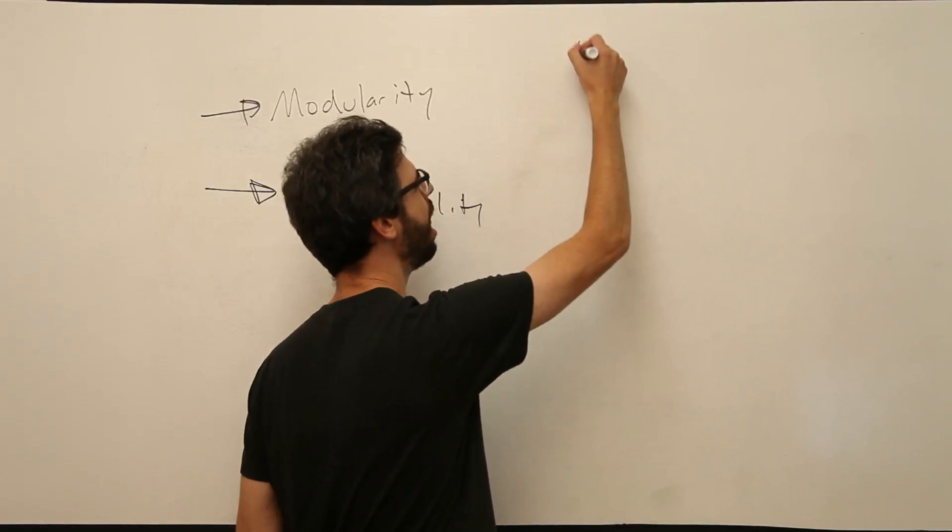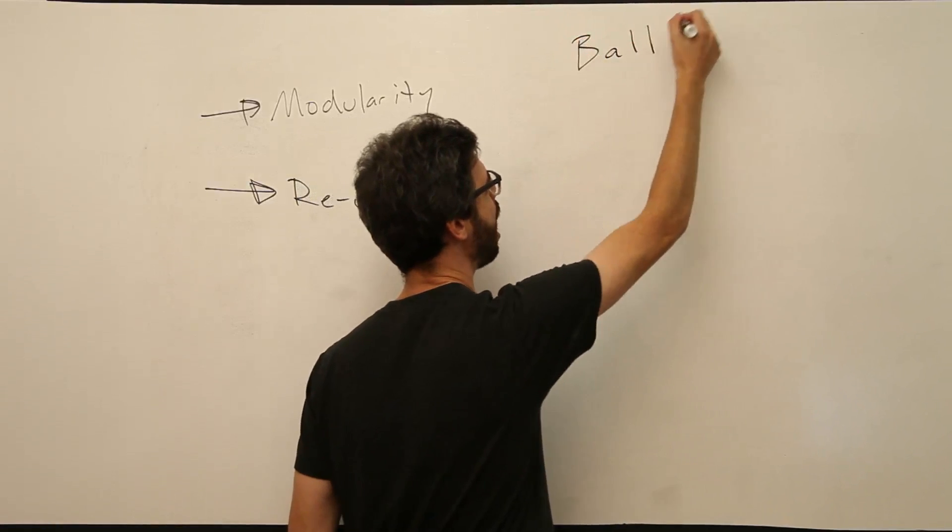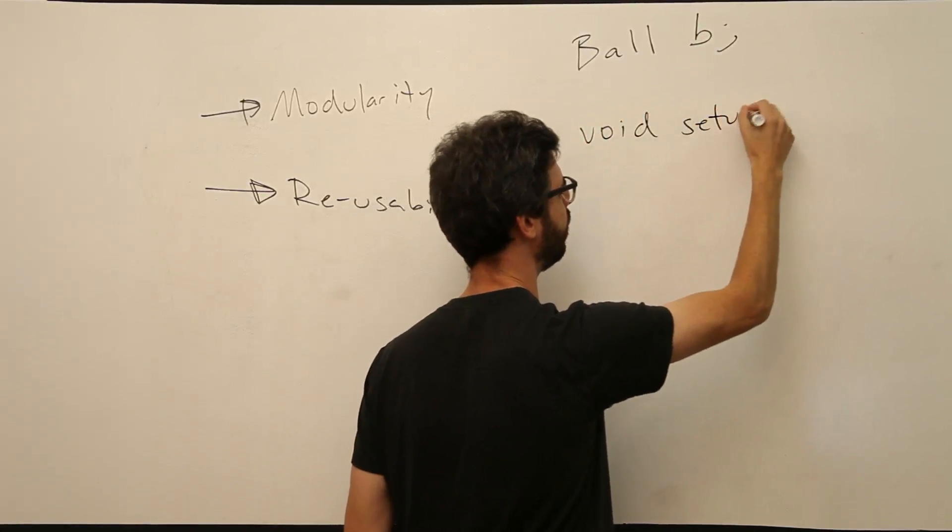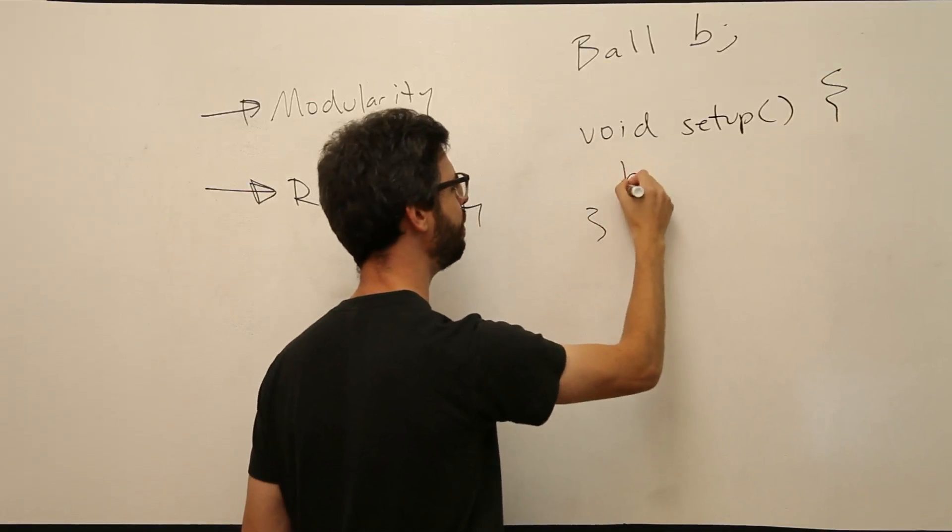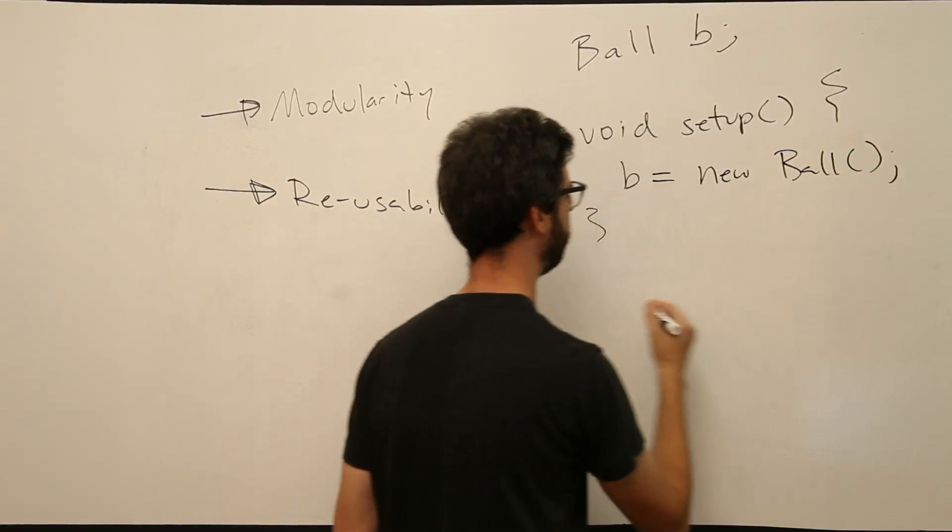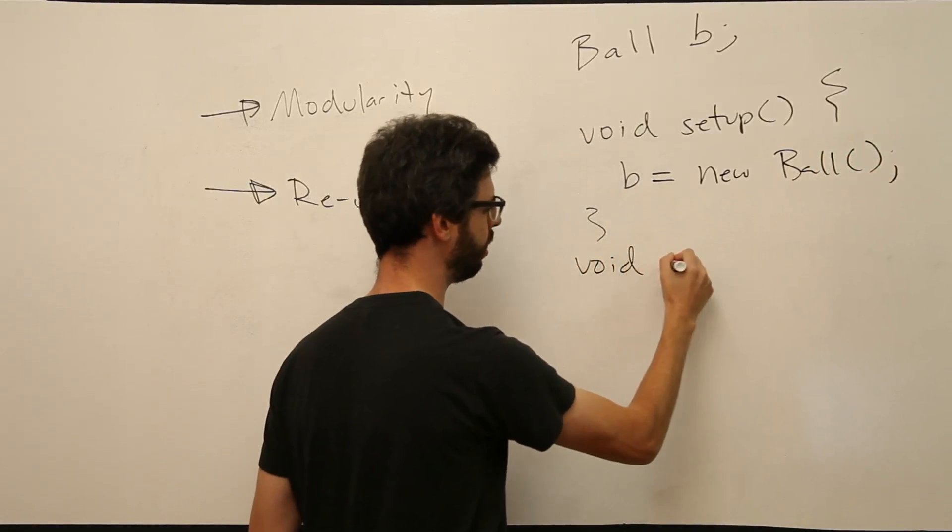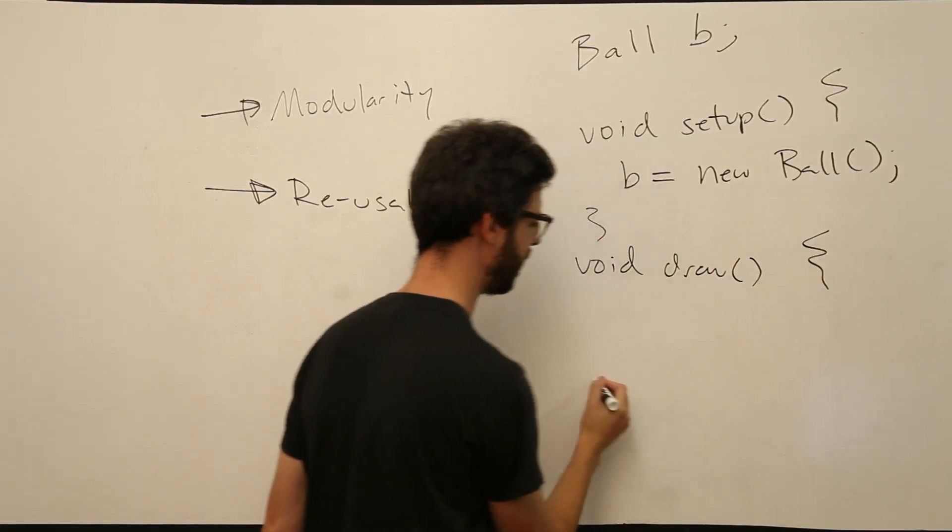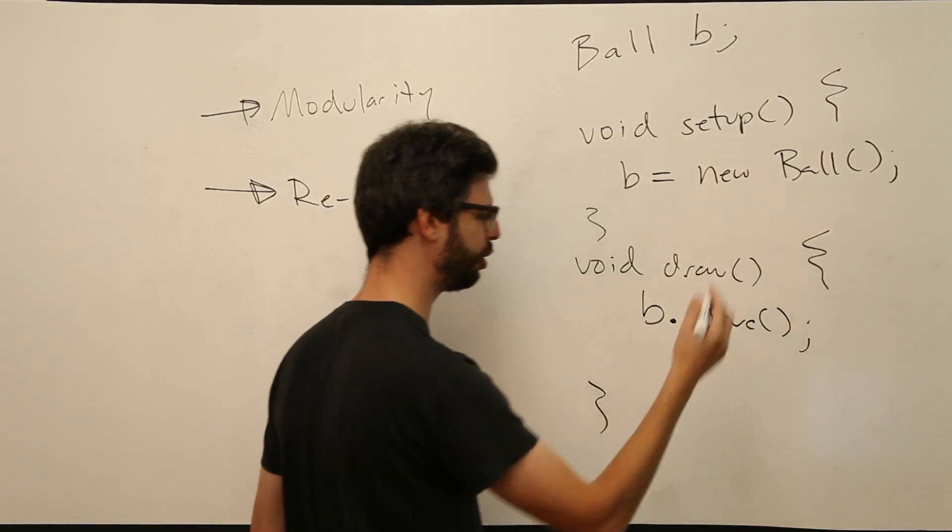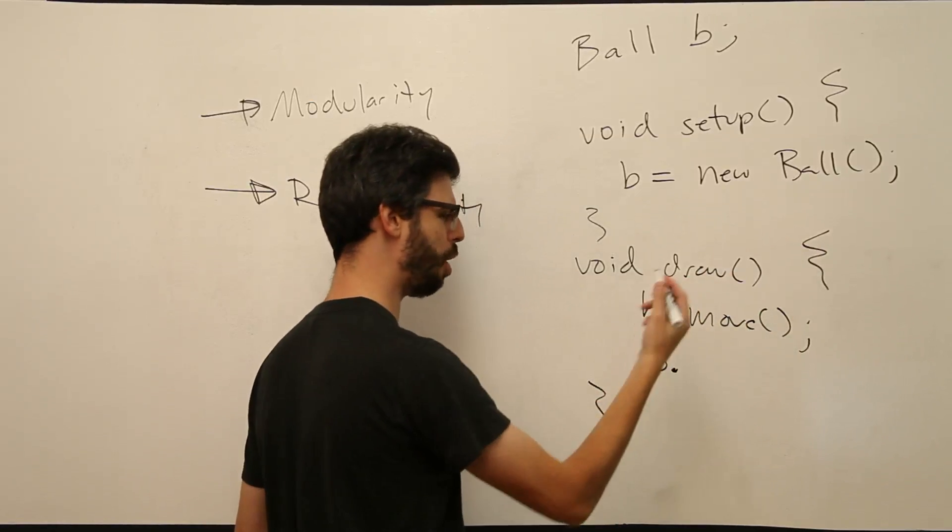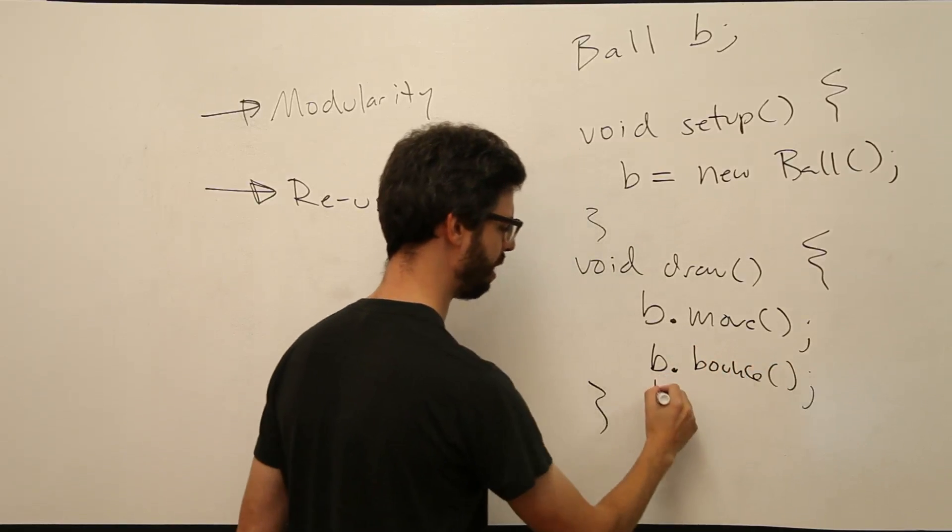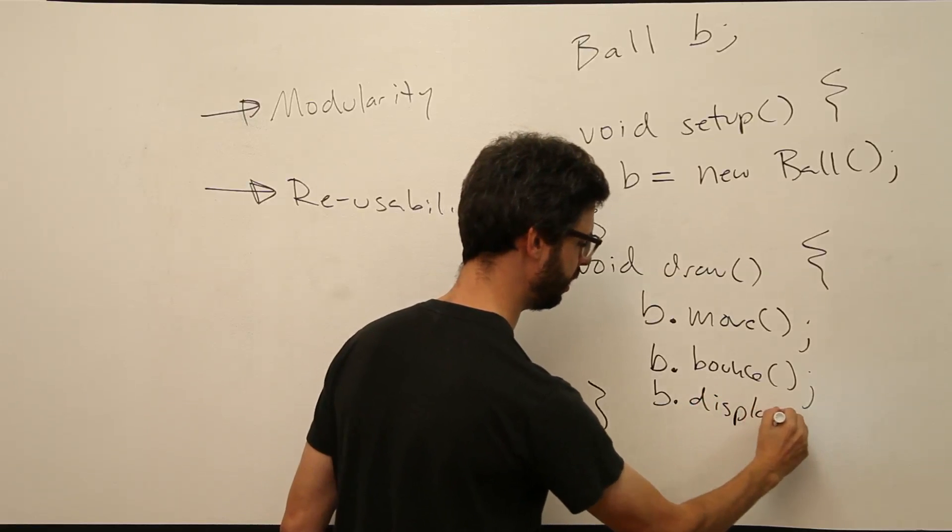What if I could say I'm going to have a ball object called B. And in setup I'm going to say hey B is a new ball object. And in draw I'm going to say things like you know B should move about the screen. That ball B it should move about the screen and that ball B it should bounce off the edge.